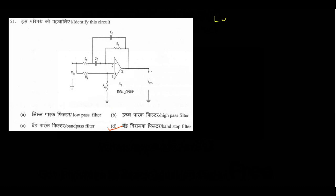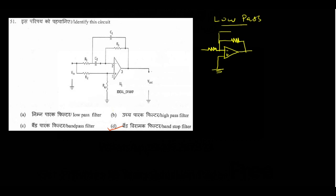Now I will show you the low pass filter and high pass filter. A low pass filter looks just like an inverting amplifier. In the inverting amplifier, on the input side we have one resistor Ri, and a feedback resistor. If we add a capacitor in parallel with the feedback resistor, then this is a low pass filter.